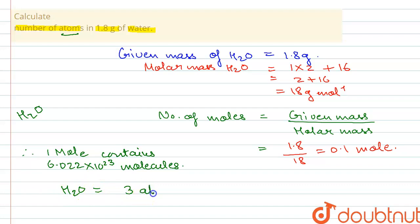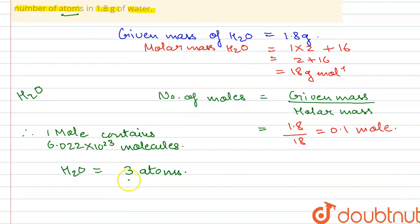means we have three atoms. So we will have to multiply by three with the number of molecules so that we can get the number of atoms present in it. The number of atoms